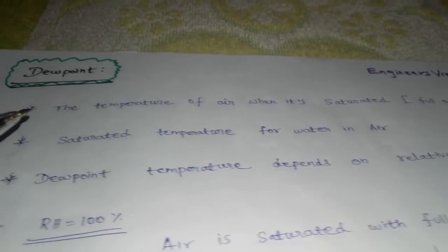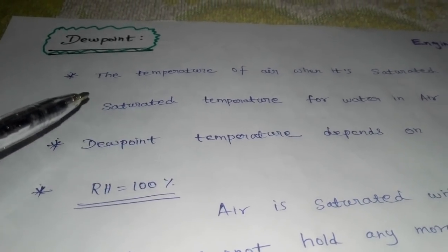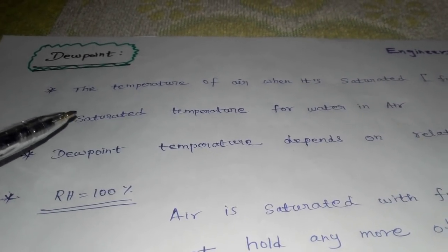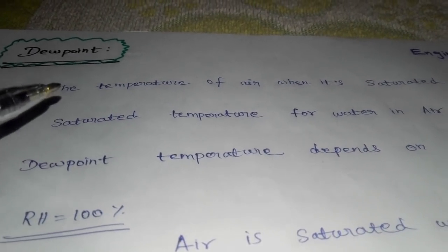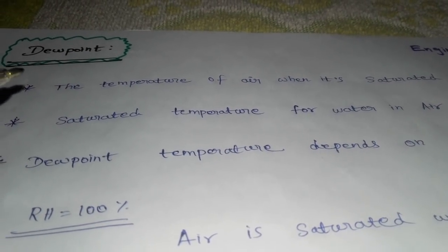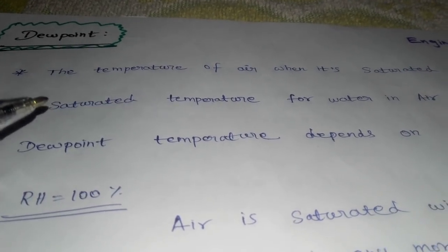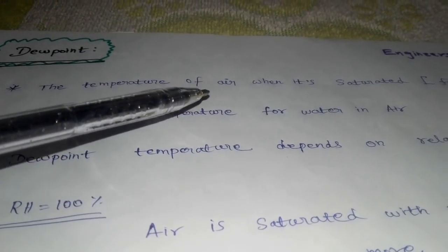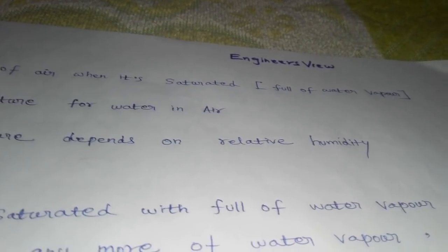Dew point — at least if you are at 100%, you can see the temperature. That is the dew point. Suppose if we have a room at 20 degrees Celsius, then we have 100% humidity, so the dew point temperature is 20 degrees Celsius. So simply, the temperature of the air when it is saturated — that is full of water vapor — the water vapor is full and the air is full, then we have a dew point.